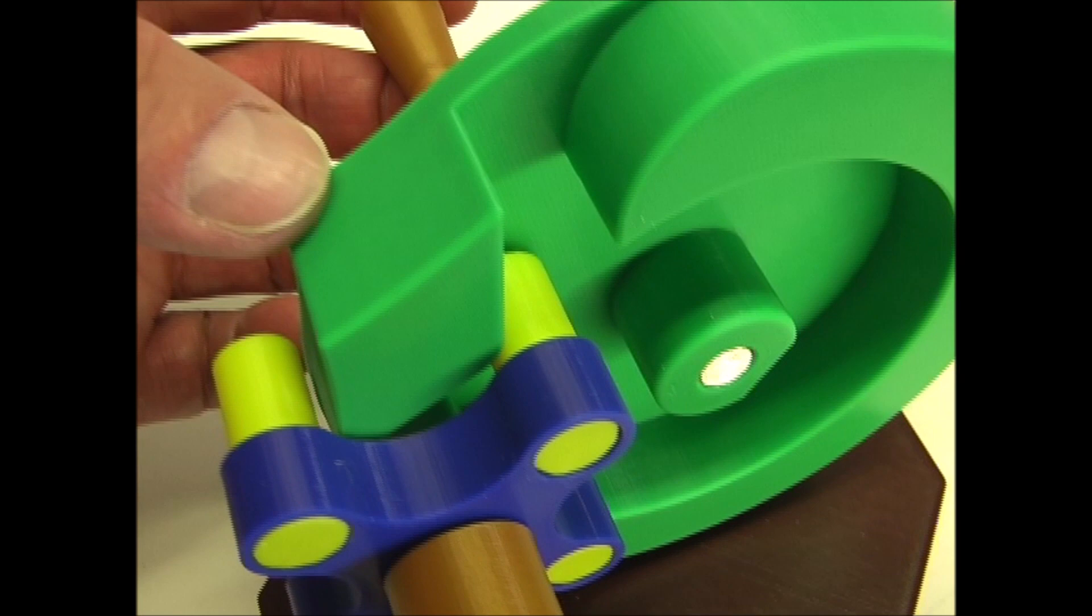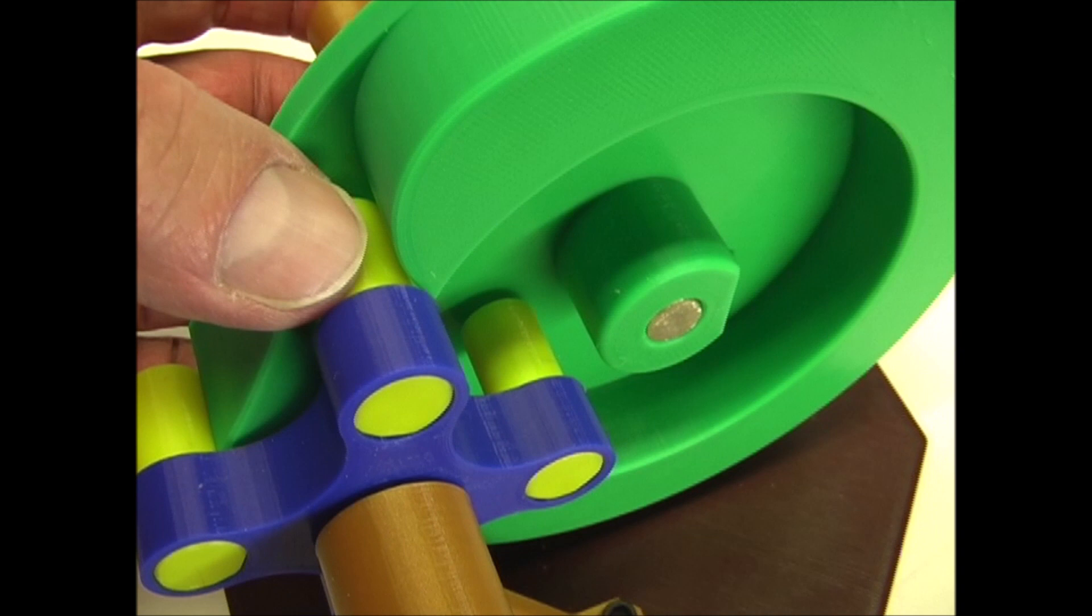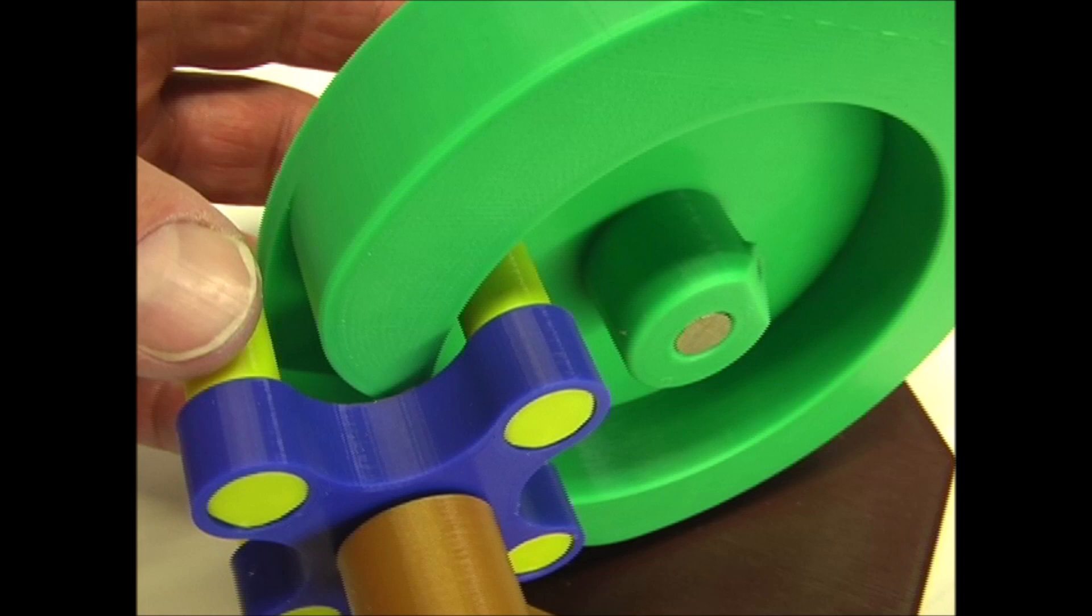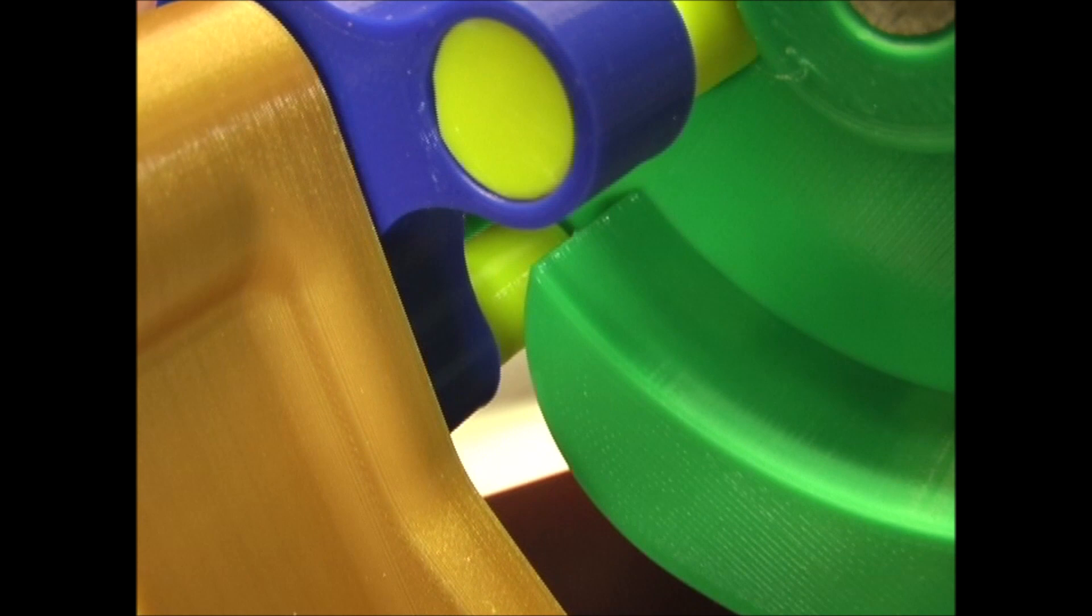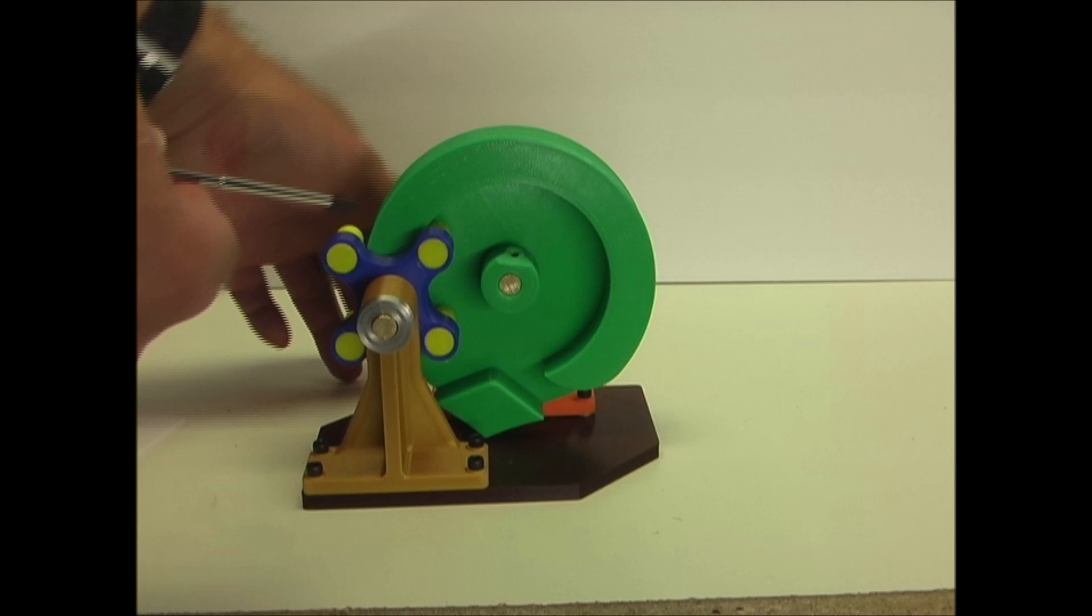So here you can see how this raised edge hits this pin and starts turning. And then this pin is coming up through the slot and continues through the slot, getting pushed around until it's indexed one turn. And you can see on the bottom as it comes around, and that pin goes through the slot on the bottom side of the wheel.